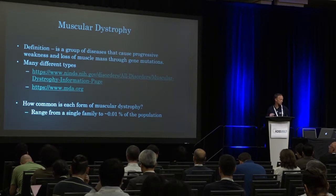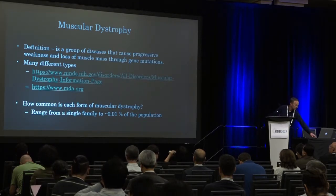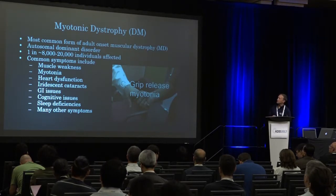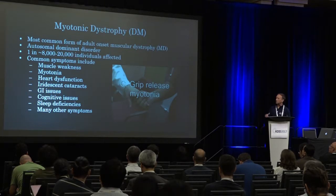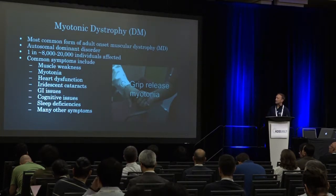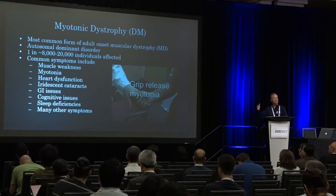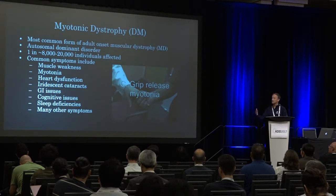The disease we're going to talk about, myotonic dystrophy, is a little more common. It's the most common form of adult onset muscular dystrophy, though there are children that are born with it. That's how a whole extended family gets diagnosed. It's an autosomal dominant disorder, meaning it's in every generation — it can't skip a generation. If it skips a generation, the mutation is lost in that family, which is obviously a good thing.